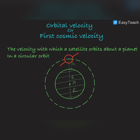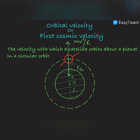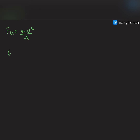Let us find out the magnitude of this velocity. Consider a satellite orbiting around a planet. The satellite experiences a centrifugal force of mv²/r, which is balanced by the gravitational pull of the planet. So F_gravitational equals mv²/r, where r is the radius of the orbit. F_gravitational is GMm/r², so cancelling m and r, v equals the square root of GM/r.